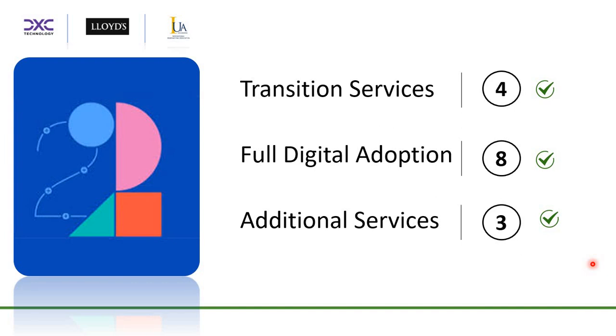The Blueprint 2 services are divided into three broad categories: Transactional, Full Digital Adaptation and Additional Services.